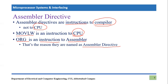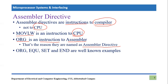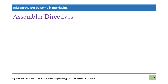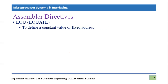Assembler directives are directions given to the assembler. Well-known examples are ORG, EQUATE, SET, and AND. We will see these examples in coming lectures multiple times. Let's cover EQUATE first — what does the EQUATE assembler directive do? It is used to define a constant or a fixed value.